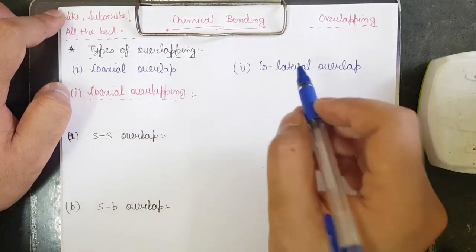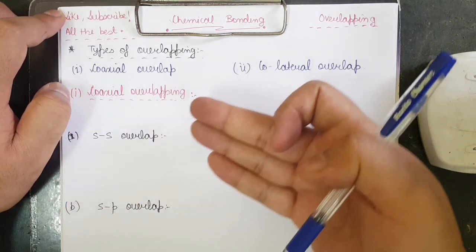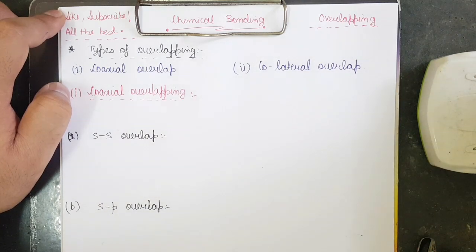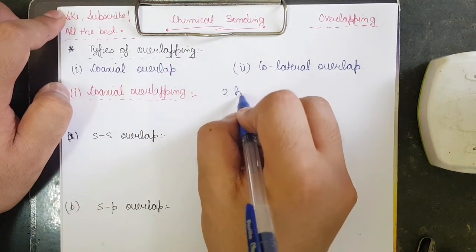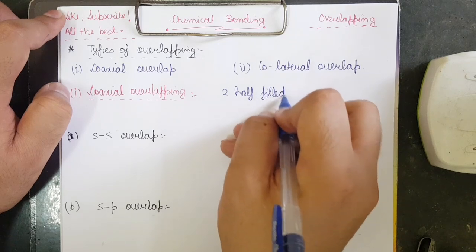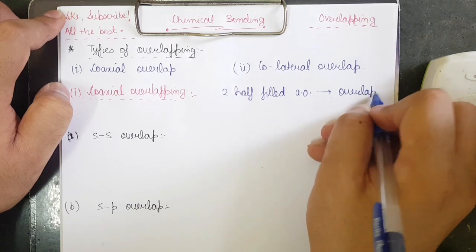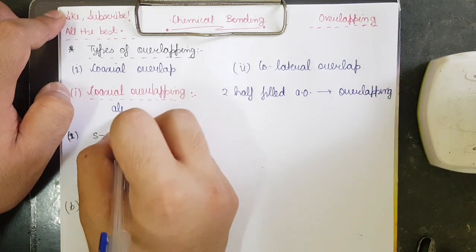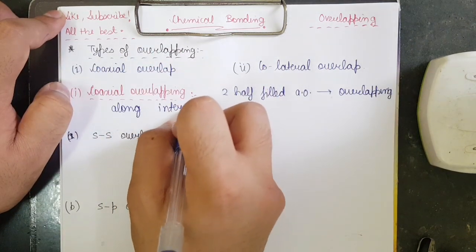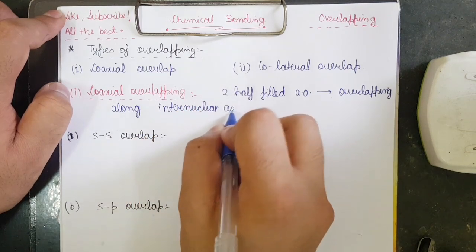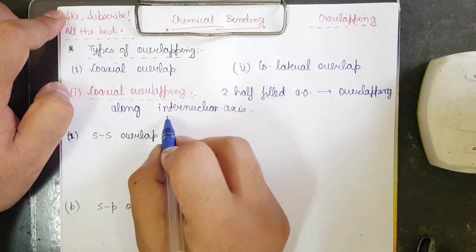Coaxial — as the name specifies. First, a definition, then we will understand the logic behind it. Coaxial means same axis. Two half-filled atomic orbitals overlap along the internuclear axis. That same axis is the internuclear axis.